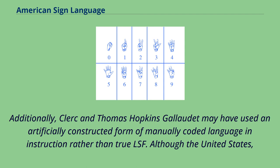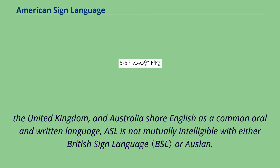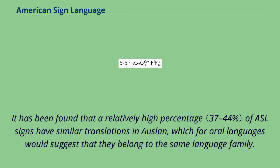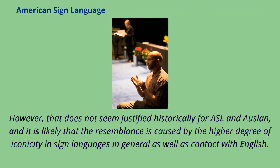Although the United States, the United Kingdom, and Australia share English as a common oral and written language, ASL is not mutually intelligible with either British Sign Language or Auslan. All three languages show degrees of borrowing from English, but that alone is not sufficient for cross-language comprehension. It has been found that a relatively high percentage of ASL signs have similar translations in Auslan, likely due to the higher degree of iconicity in sign languages in general as well as contact with English.